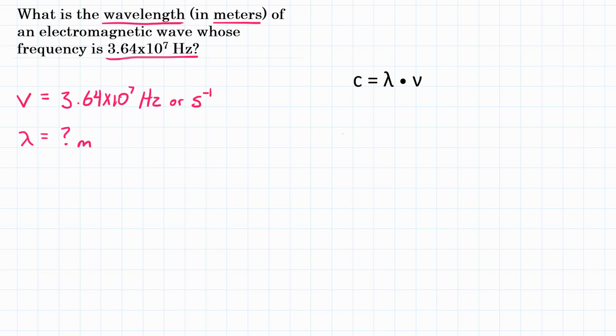For this problem, we're going to use this equation over here, and it is the speed of light, which is c, is equal to wavelength times frequency. So we need c, we need the speed of light, and that is a constant. It is 3.00 times 10 to the 8 meters per second.